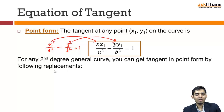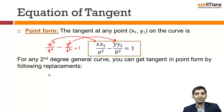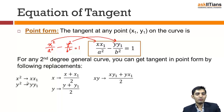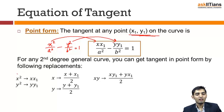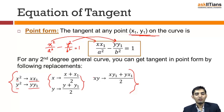For any second degree general curve — whether it is an ellipse, hyperbola, parabola, or any other general curve — you can get the tangent in point form just by making the following replacements: replace x-squared by xx1, y-squared by yy1, x by (x + x1)/2, y by (y + y1)/2, and xy by (xy1 + yx1)/2. Remember, this point must lie on the curve — if x1 comma y1 is lying on the curve, only then is this valid.